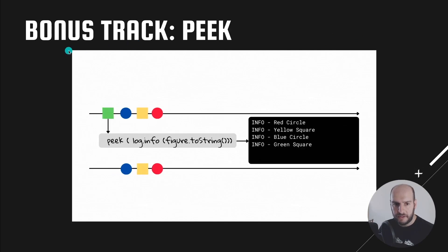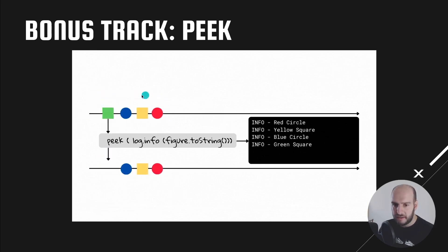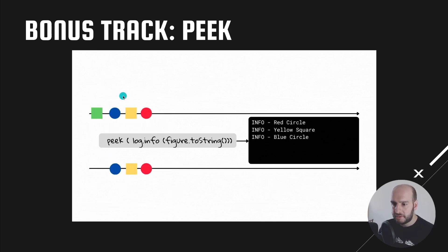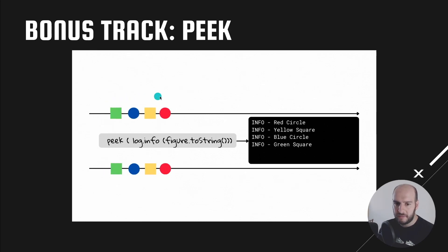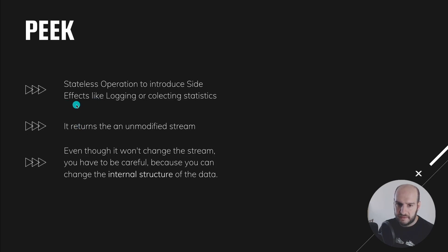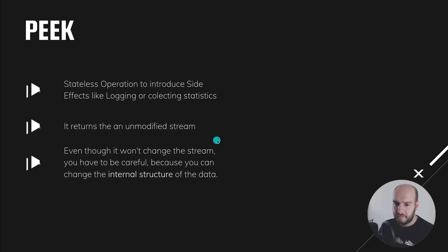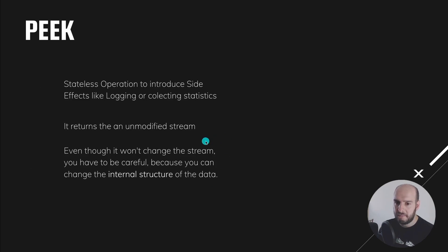As a bonus, we have the peek operation. Peek is used to introduce what we call in functional programming a side effect — something that modifies the state of the application without modifying the stream or its data. We use it to send data somewhere, like a log or statistics. Peek returns an unmodified stream and is a stateless operation. However, it's very important that we don't modify the data we are peeking at, as that could be harmful or at least not obvious. If you want to transform the data, use the map operation, not peek.